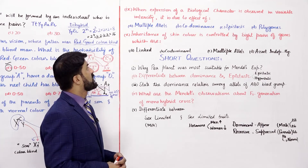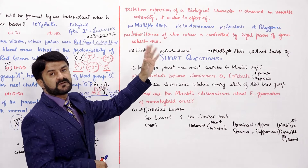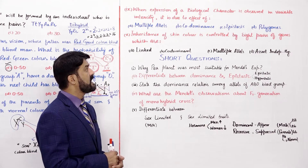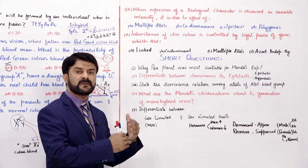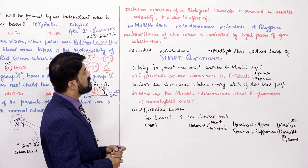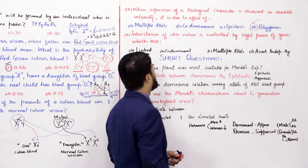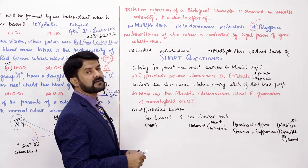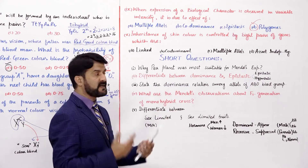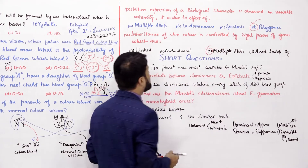Question number 9: when the expression of a biological character is observed in variable intensity in the population — for example skin color, eye color, height, or weight — this type of continuously varying character is controlled by polygenes. The answer is option D. Question number 10 also relates to skin color, which is controlled by more than one pair of genes, so it is also called polygenic inheritance. The answer is polygene (option D).